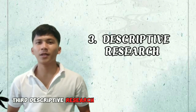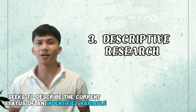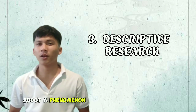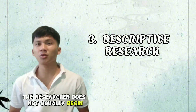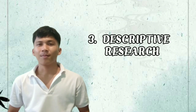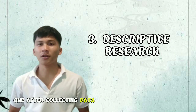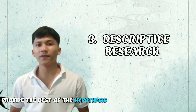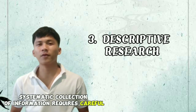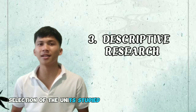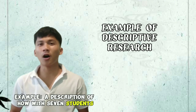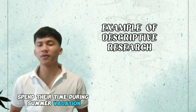Third, descriptive research seeks to describe the current status of an identified variable. These research projects are designed to provide systematic information about a phenomenon. The researcher does not usually begin with a hypothesis but is likely to develop one after collecting data. Systematic collection of information requires careful selection of the units studied and careful measurement of each variable. Example: a description of how grade 7 students spend their time during summer vacation.